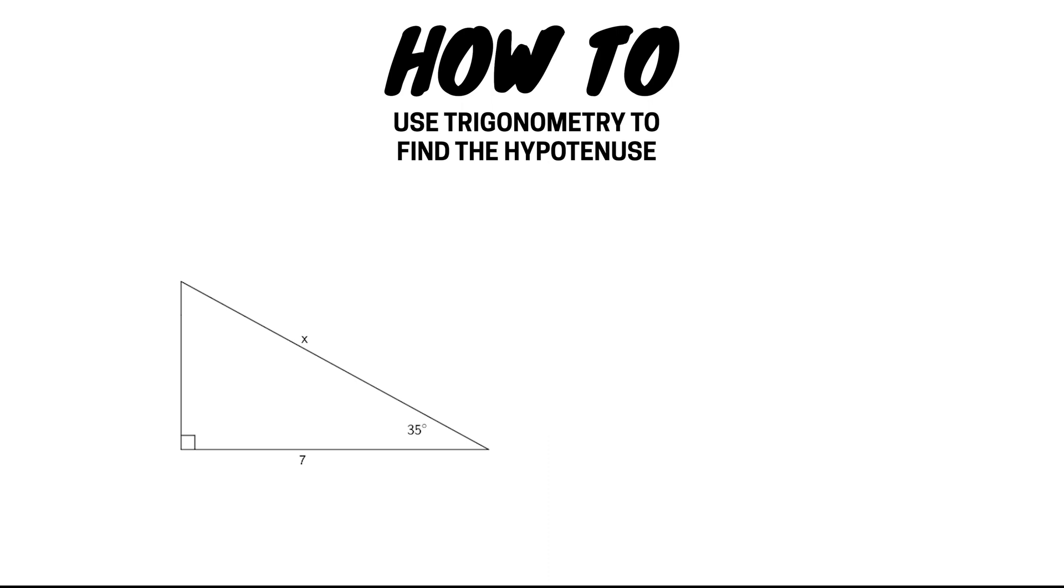Our first step is to label the sides of the triangle. The side opposite the right angle is the hypotenuse. The side opposite the angle is our opposite, and the side next to or adjacent to the angle is our adjacent side.